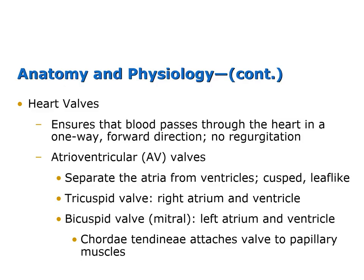Within the heart are several valves that ensure that blood moves in a one-way direction only — forward — with no regurgitation or backflow. The first valves are the atrioventricular valves, which separate the atria from the ventricles. They are the tricuspid and the bicuspid valve. The tricuspid has three cusps versus two. It is on the right side — located between the right atrium and right ventricle. The bicuspid valve is also sometimes called the mitral valve, and it is located between the left atrium and the left ventricle.